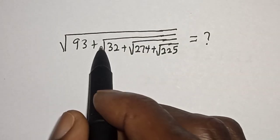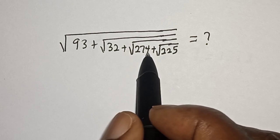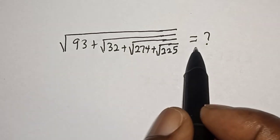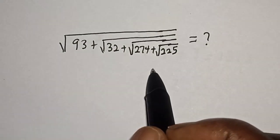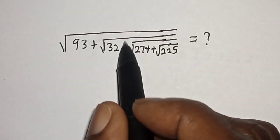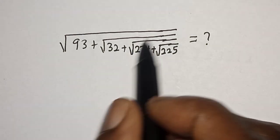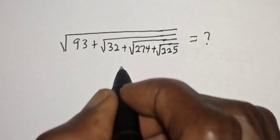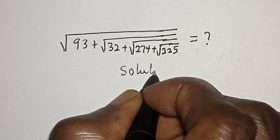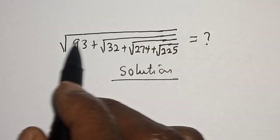Square root of 93 plus square root of 32 plus square root of 274 plus square root of 225 is equal to what. Hi everyone, welcome to my class. In this class we quickly want to evaluate this nice square root problem. But before we proceed, please don't forget to like, share, comment and subscribe.